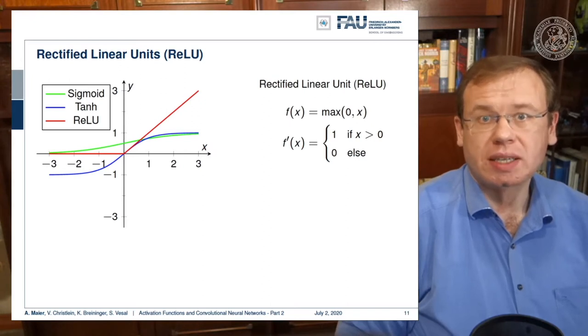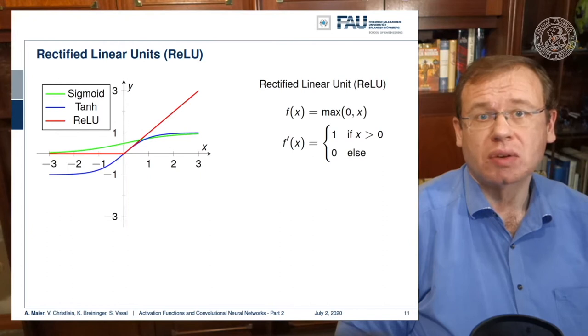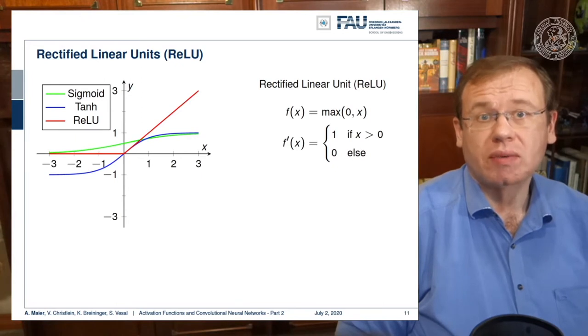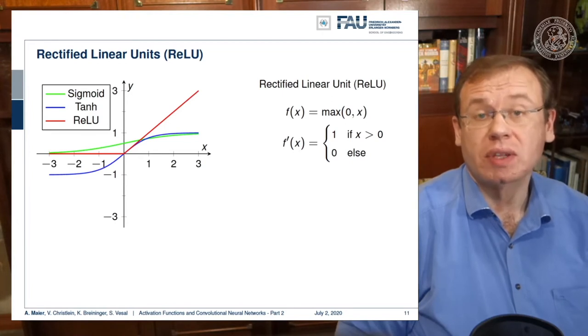Due to the piecewise linearity there's a significant speed up. The function can be evaluated very quickly because we don't need the exponential functions that are typically a bit slow on the implementation side. We don't have that vanishing gradient problem because we have really large areas of high values for the derivative of this function.